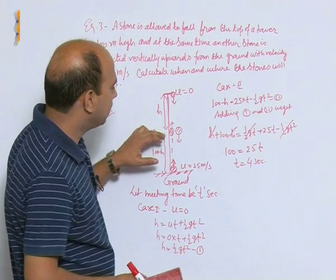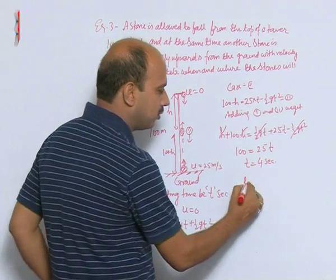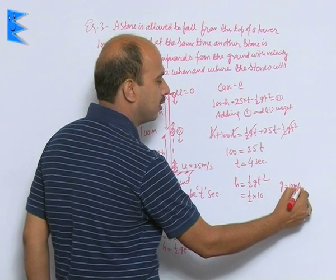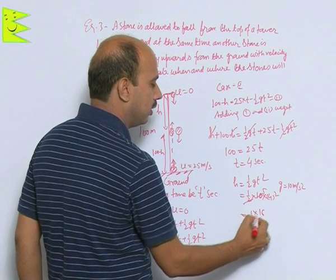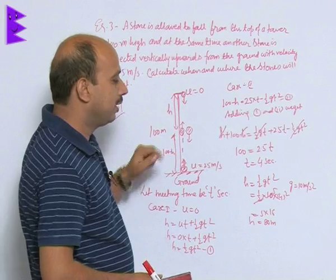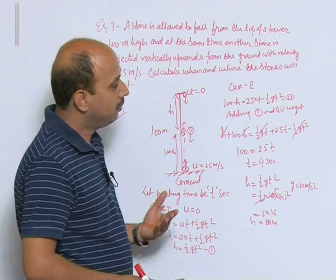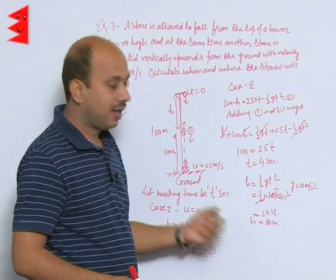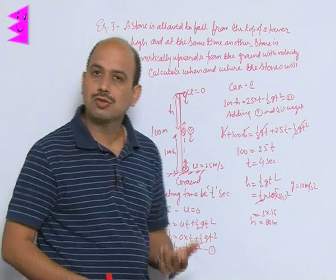Now calculate the height. Using h = ½gt² with g = 10 m/s² and t = 4 s: h = ½ × 10 × 16 = 5 × 16 = 80 m. Both stones meet after 4 seconds, at 80 m from the top of the tower. This is an important question involving two stones together — you must apply all equations of motion correctly with the proper sign of acceleration due to gravity. After these examples, we will move on to the next topic: mass and weight.